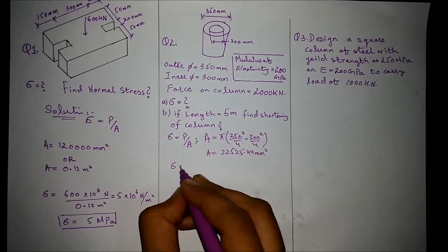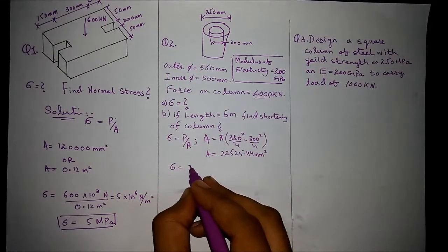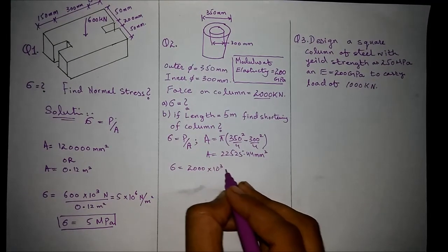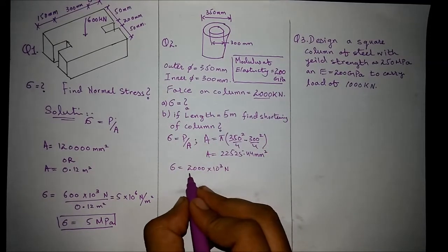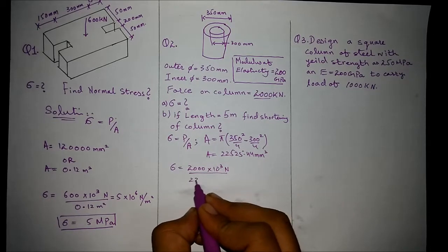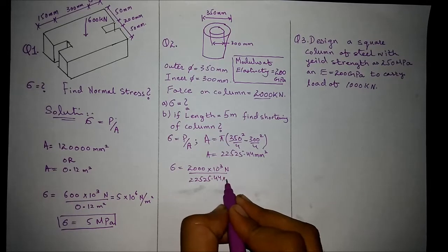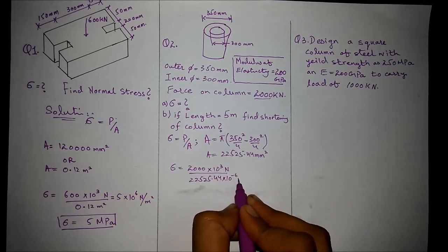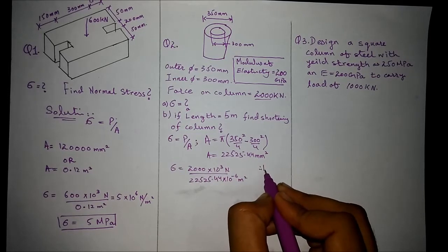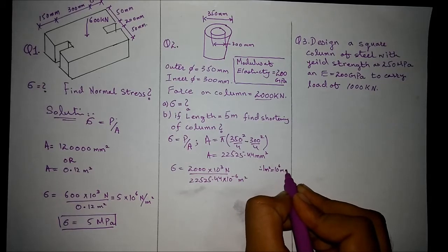Substituting the value in stress formula, we have been given the force, that is 2000 newtons. Since it was kilonewtons, we converted into newtons with exponent three. Divided by 22525.44 exponent minus six meter square, or millimeter square. We know that one meter square equals 10 raised to power 6 millimeter square.